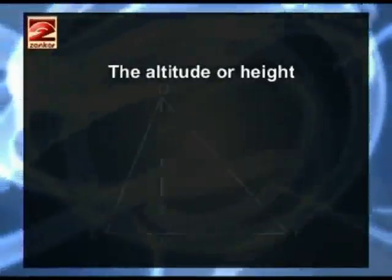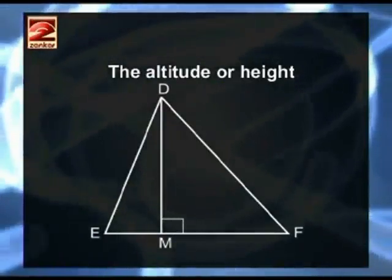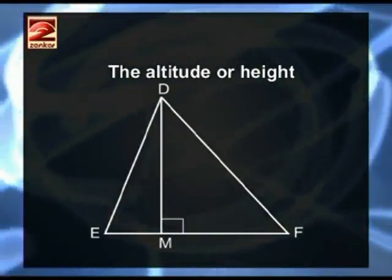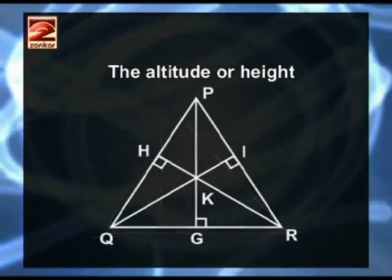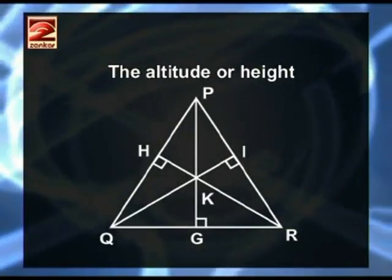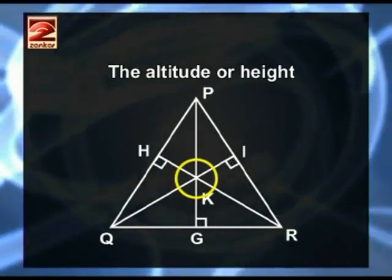the Altitude or Height. In a triangle, a segment drawn through a vertex perpendicular to the opposite side is called the altitude or height of the triangle. There are three altitudes for a triangle and the three altitudes of any triangle are concurrent. That means they all pass through one point only.